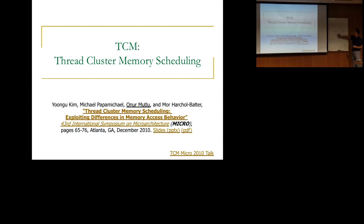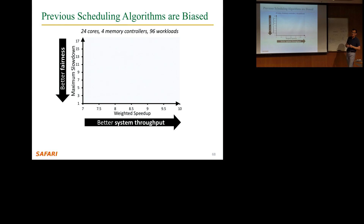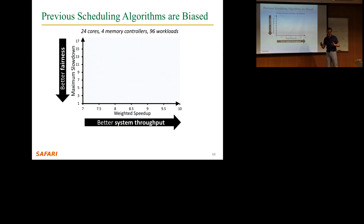After developing ATLAS, we realized: why are we treating these different threads in a similar way, especially if you want fairness and performance simultaneously? Looking at scheduling algorithms discussed — Atlas has a throughput bias, PARBS has a slight fairness bias because of batching, STFM is suboptimal, and first-come-first-served is very unfair. No scheduling algorithm is close to the ideal of simultaneously maximizing throughput and fairness. We wanted to break that trade-off.